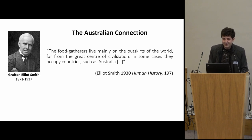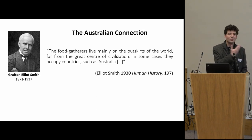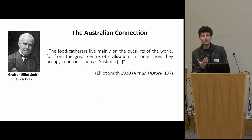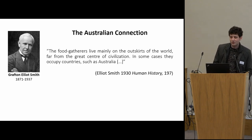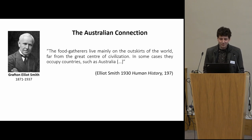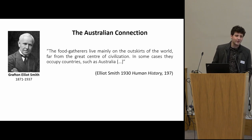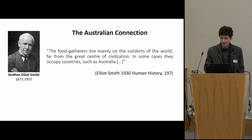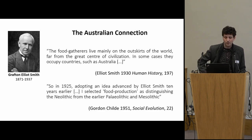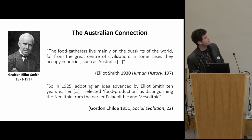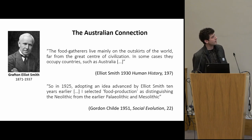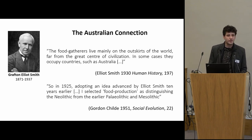I call this the Australian connection — Elliot Smith, the other important figure of the British School of Diffusionism, was also from Australia. He said things like: 'The food gatherers lived mainly on the outside and outskirts of great centers of civilization; in some cases they occupied countries such as Australia.' And Childe actually acknowledged what he owed to Elliot Smith, saying: 'In 1925, adopting an idea advanced by Elliot Smith ten years earlier, I selected food production as distinguishing Neolithic from the earlier Palaeolithic and Mesolithic.'